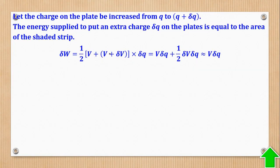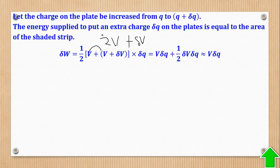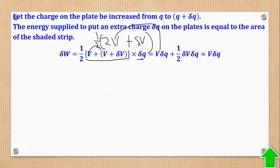We are going to expand the trapezium area formula. When you expand, you get one-half times (2V plus small change in V) times small change in Q. There is a half outside, so half times 2V gives V, and there is also a small change in Q outside the bracket, giving V times small change in Q. Then there is also the half times small change in V, multiplied by small change in Q.